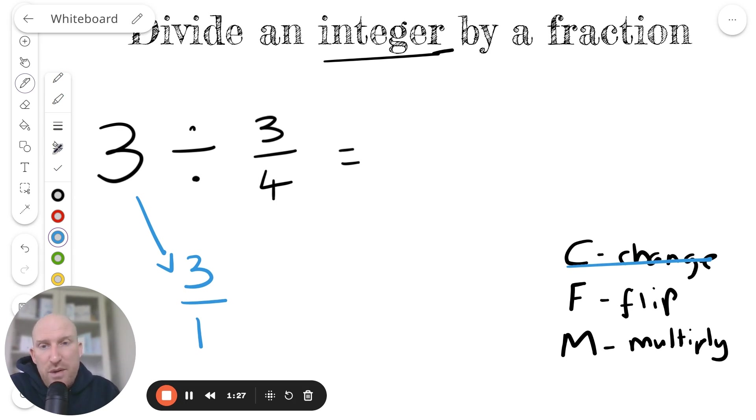Then we're going to flip the second fraction. So this 3 quarters, we're going to flip it. The 3 is going to become the denominator and the 4 is going to become the numerator. So it's going to be 4 over 3.